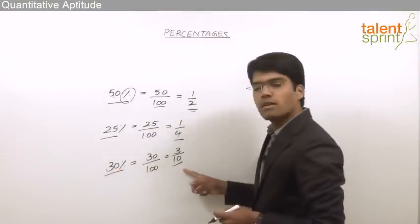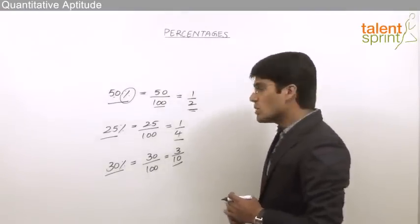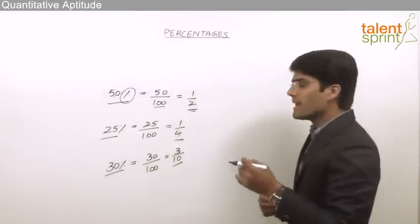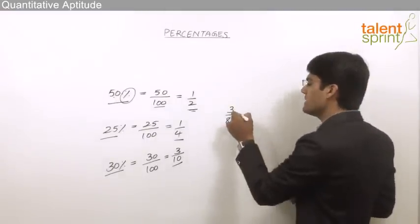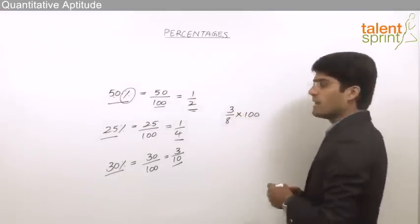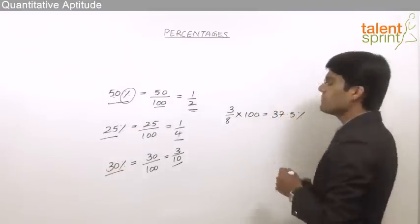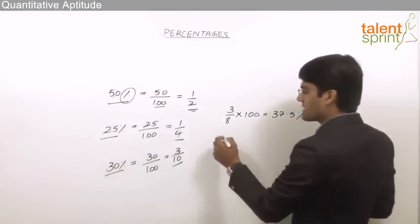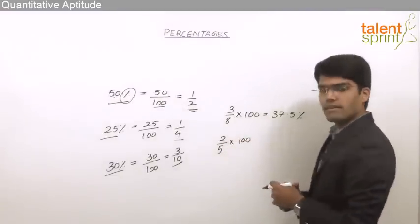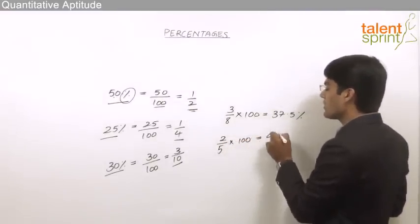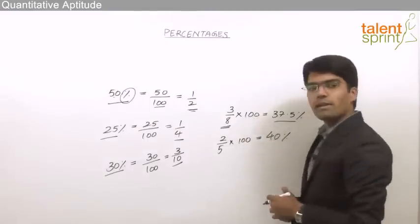Now let us understand how to convert a fraction into a percentage. For example, the fraction 3 by 8 — to convert this into percentage, simply multiply the given fraction by 100. So 3 by 8 into 100 equals 37.5, which is 37.5 percent. Similarly, 2 by 5 multiplied by 100 equals 40, which is 40 percent. So a fraction is converted to a percentage by multiplying by 100.